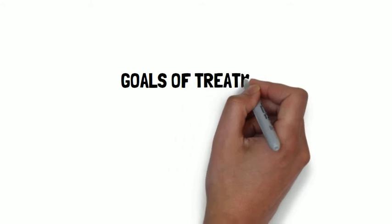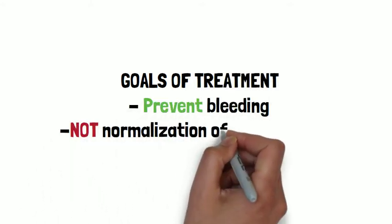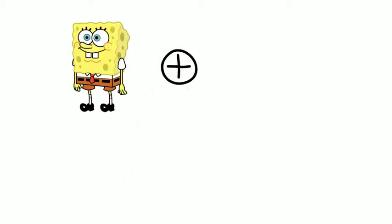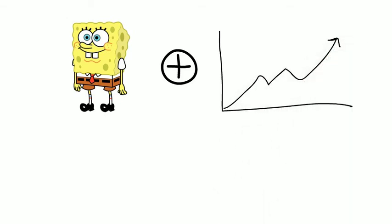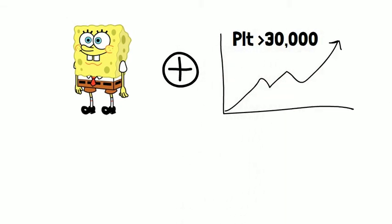Now let's talk about treatment. The goals of treatment are to treat or prevent significant bleeding, not to normalize the platelet count. Diagnosis of ITP does not imply that therapy is required. Patients can be divided into three categories. In category one, we have patients who are asymptomatic with platelet counts greater than 30,000.